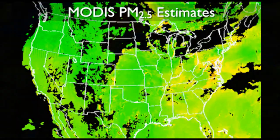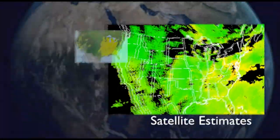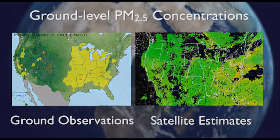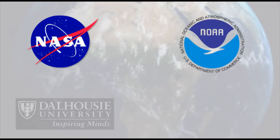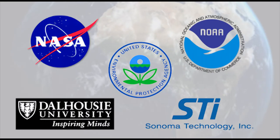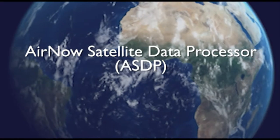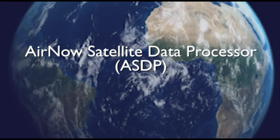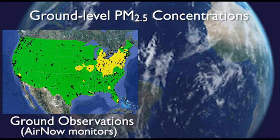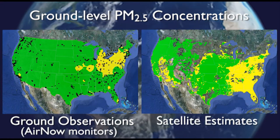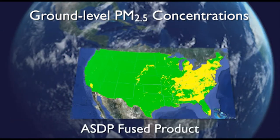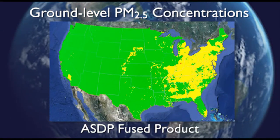Particle concentration estimates from MODIS have been used to supplement ground-based measurements of PM2.5. Through a collaboration involving NASA, NOAA, Dalhousie University, and Sonoma Technology, the EPA recently created the AirNow satellite data processor, or ASDP. The ASDP fuses ground-based measurements of PM2.5 from EPA's AirNow network with estimates derived from NASA satellite measurements to provide more accurate and more spatially complete estimates of particle pollution across the U.S.